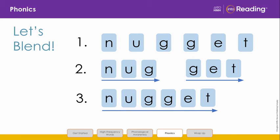Remember that sometimes the vowel sound in the second syllable is neither short nor long. Instead, it is the schwa sound. So instead of nugget, we should say nugget. Blend and say the word with me. Nugget, nugget. Great job!